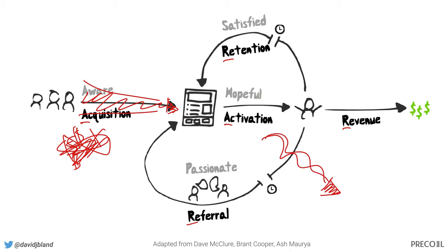When you experiment, you want to focus your experiments on activation. Is there something disconnected where people click through but the value proposition they see is different from what they saw in your ads, your marketing material, your social media? If there's a big disconnect, people might convert at maybe a 3% click-through rate, but you'll get something like a 0% conversion rate on your page, your app, or your product. So be mindful of those changes and anchor your experimentation on activation rather than keep pushing more people in through acquisition.